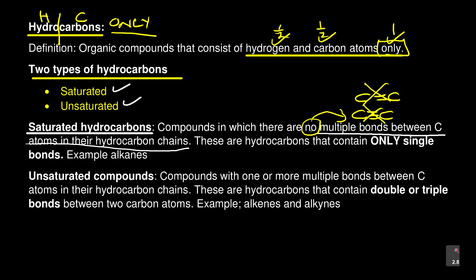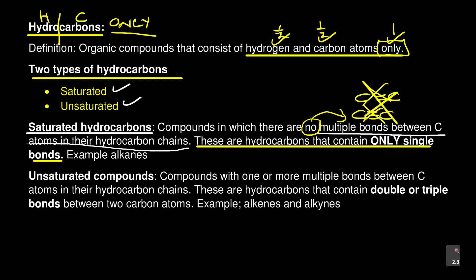These are compounds in which there are no multiple bonds between carbon atoms in their hydrocarbon chains. But I prefer the second definition, which says these are hydrocarbons that contain only single bonds. The moment you say hydrocarbon, you have already told us they contain only hydrogen and carbon. So by saying they contain only single bonds, I'm already defining that — hydrogen and carbon atoms only, and also only single bonds, meaning I will not find any multiple bonds. It's up to you how you want to define it.